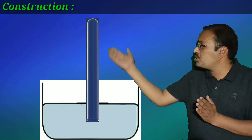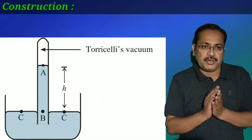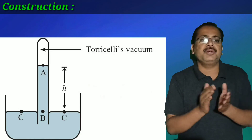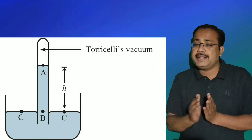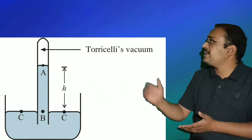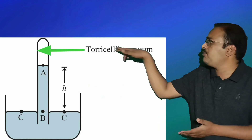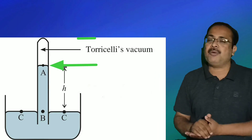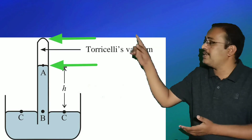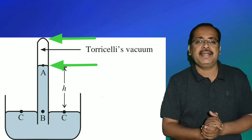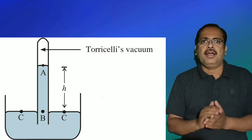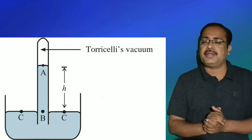The level of mercury in the glass tube lowers as some mercury spills into the dish. A gap is created between the surface of mercury and the closed end of the glass tube. That gap does not contain any air and is called the Torricelli vacuum. It contains some mercury vapors.